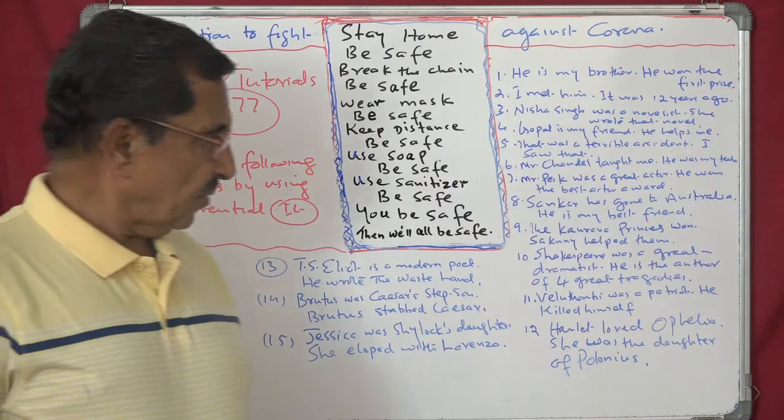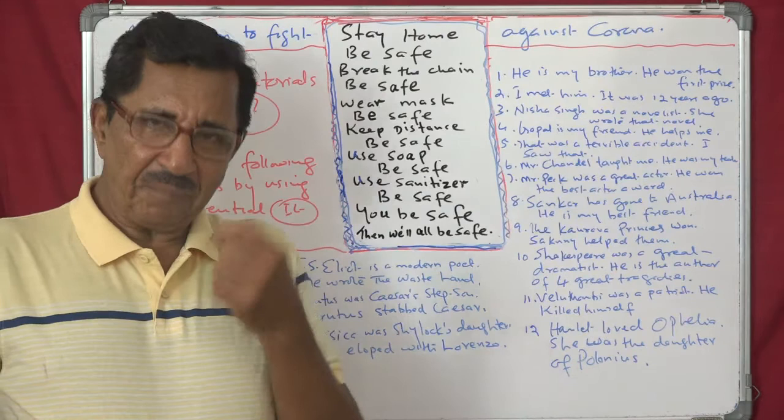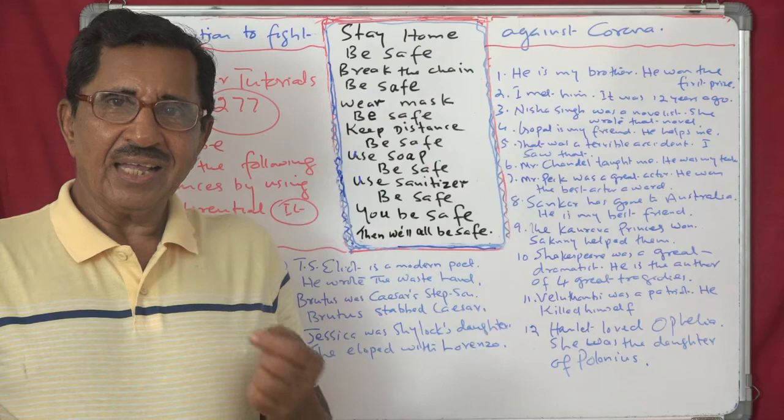'Velutambi was a patriot. He killed himself.' Combined: 'It was Velutambi, the patriot, who killed himself.'